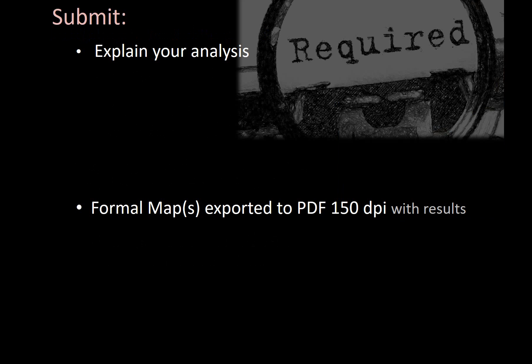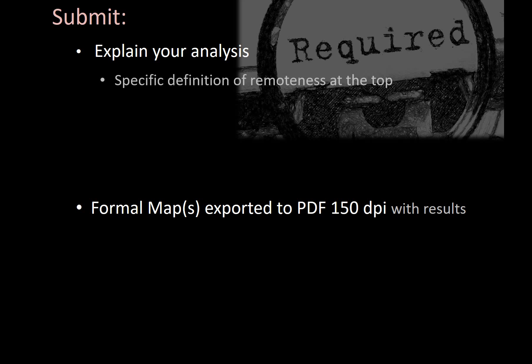For submissions, you're going to turn in two things. Number one is an explanation of your results — sort of like the lab instructions. Then you're going to submit at least one formal map, but you can have more than one. At the beginning of your instructions, you should tell me what your definition of remoteness is or what your project goal was — that should be very clear right at the top. It should have images and bullet points or some kind of structure. Remember that we are your audience: Peter, Yadier, Matt, and myself.